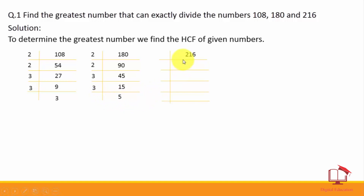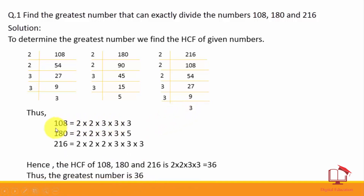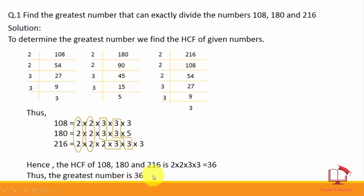The last number is 216. 2 × 1 = 2; since 1 is less than 2, we carry; 2 × 8 = 16; 2 × 5 = 10; 2 × 4 = 8, carry 1; 2 × 7 = 14; then 3 × 9 = 27; 3 × 3 = 9. These are the factors of 108, 180, and 216. The common numbers are 2, 2, 3, and 3. We write these one time: 2 × 2 × 3 × 3. The greatest number is 36.